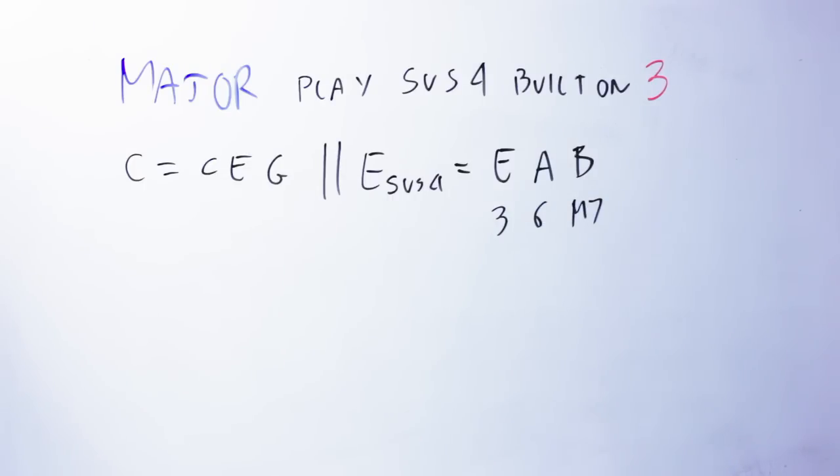The E suspended fourth chord contains the following note, E, A, and B, which are respectively the third, sixth, and major seventh of the major chord.